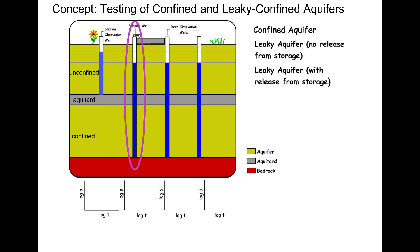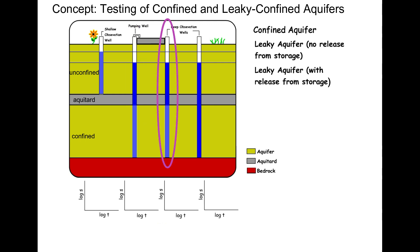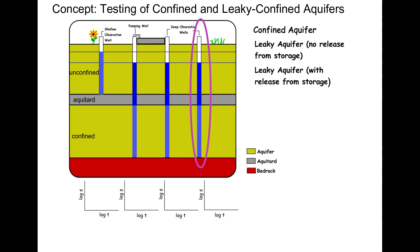The well to its right pumps water from the confined aquifer. Two more wells monitor the confined aquifer water levels at different distances from the pumped well.